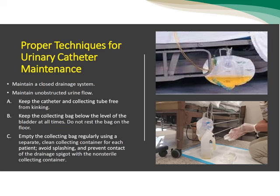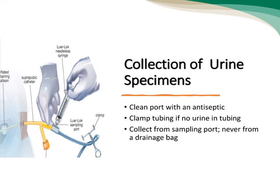Once the catheter is inserted and in place, ongoing maintenance is essential for preventing KAUTI. This includes maintaining a closed urinary drainage system, avoiding unnecessary manipulation of the catheter, and ensuring catheter tubing remains unobstructed and secure to prevent accidental dislodgement or trauma. If obstruction occurs, identify the cause and change the catheter. Catheter maintenance solutions, typically acidic washout solutions, can help with obstruction, especially in recurrent cases. For urine specimen collection, use a clean port with an antiseptic clamp, collect from the sampling port, and never from the drainage bag.